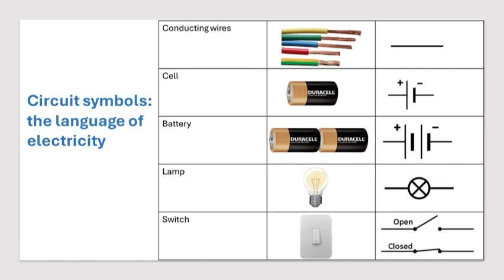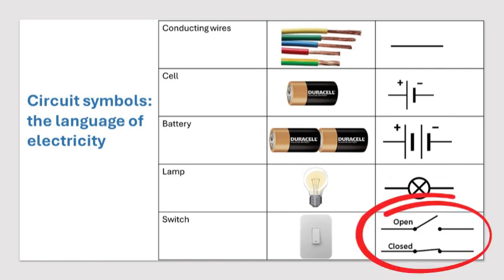In a circuit diagram, the symbol for a lamp usually looks like a circle with a cross inside. The circle represents the lamp itself, and the cross inside shows the filament, which is the part of the lamp that lights up when electricity flows through it. This symbol helps us identify a lamp in a circuit and shows where light will be produced when the circuit is complete. A switch controls the flow of electricity in a circuit. An open switch means the path is broken, so electricity cannot flow — it's like a drawbridge that's up and you can't cross it. The symbol for an open switch is a break in the line with a tilted line that doesn't touch the other side.